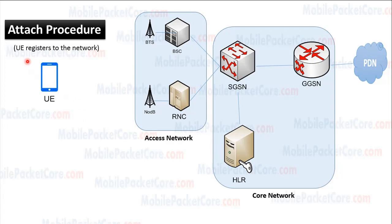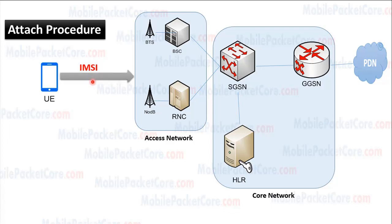During the attach procedure, the UE will need to identify itself to the network. The main identifier for the UE is called the IMSI. When the UE makes an attach procedure for the first time, it will send its IMSI to the network to identify itself.